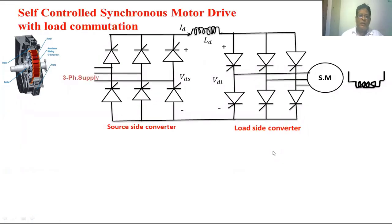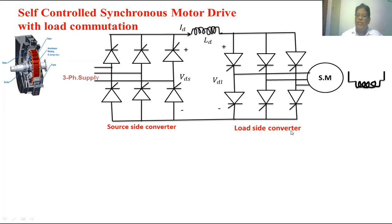This is the circuit diagram for the self-control synchronous motor drive with load commutation. The load is a synchronous motor. The circuit consists of two converters: this is the source side converter where we are giving AC supply, and this is the load side converter where we are connecting the stator winding of the synchronous motor. This is the field winding of the synchronous motor.